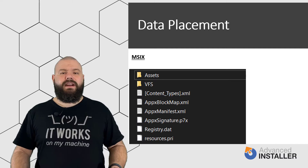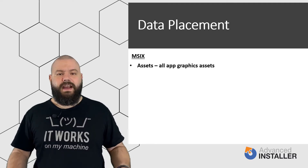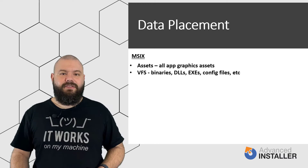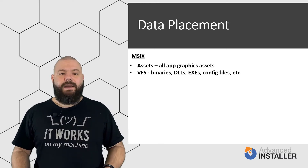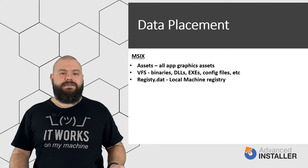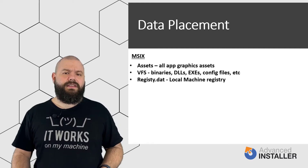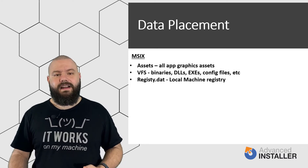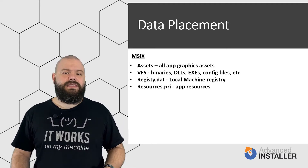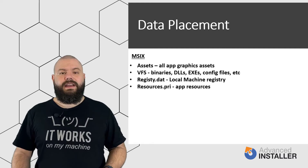Let's break down every element we see here. The Assets folder is where you will find all of the app's graphic assets, application logo, shortcut icons and so on. The Virtual File System folder, or VFS, normally contains the app's binaries, DLLs, EXEs, configuration files and so on. The registry.dat file stores the local machine registry entries of the application. Some packages also have per-user registry entries, found in the user.dat or users.classes.dat files. The resources.pri file contains app resources like localized strings and paths for additional resource files, with one file per language.